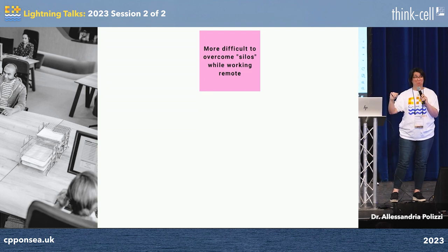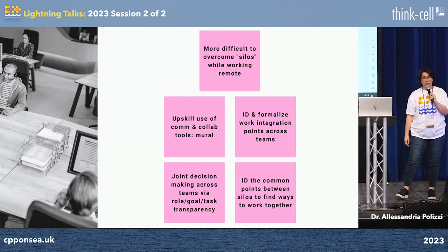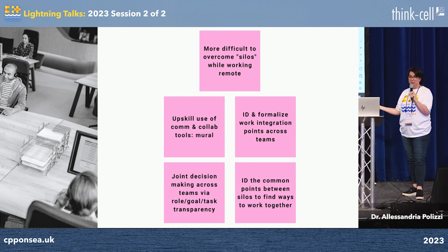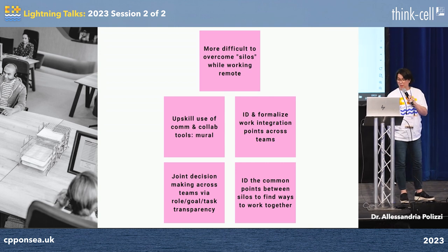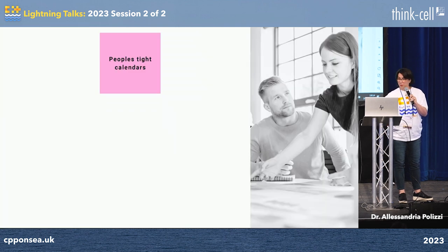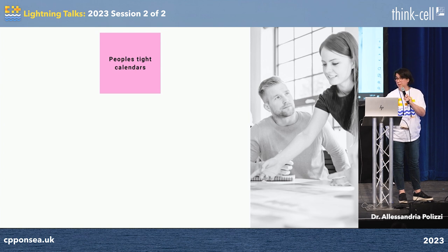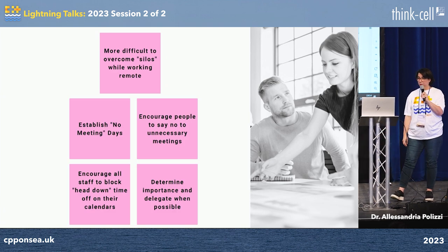Let me give you five examples from the team. This is around their workplace — they're a 100% remote organisation and they wanted to tackle the issue of overcoming silos. Here were some of their ideas: upskill on how to use Teams, make points of contact, et cetera. If I can't eliminate the issue, what can I do to diminish it? People's tight calendars — here are some ideas.